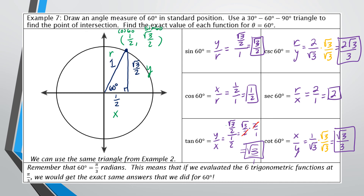The last thing to mention is that 60 degrees is the same as π/3 radians. You're expected to know that 60° and π/3 radians are the same angle. So whether a question asks for the cosine of 60° or the cosine of π/3, those two things are the same.